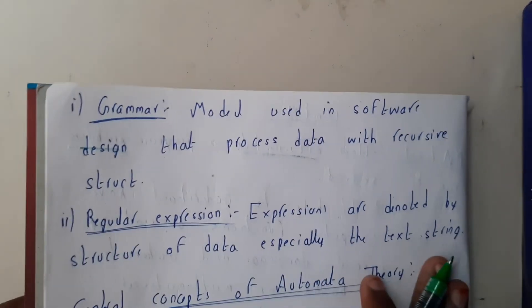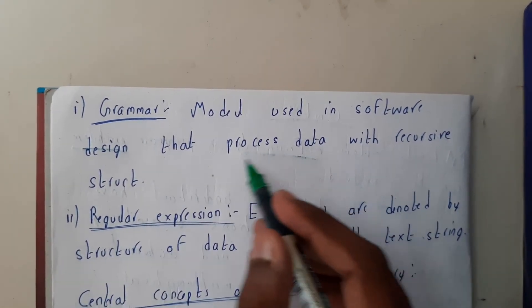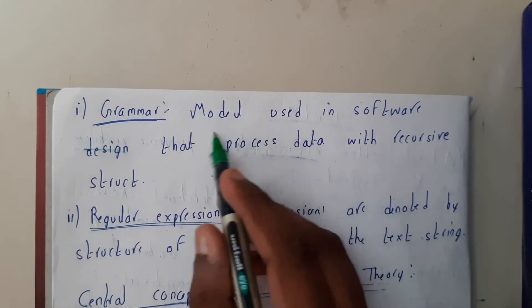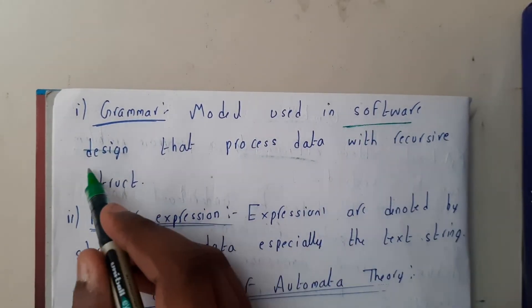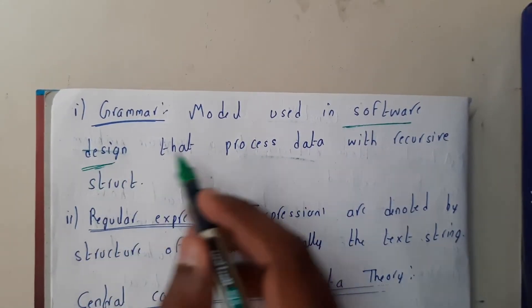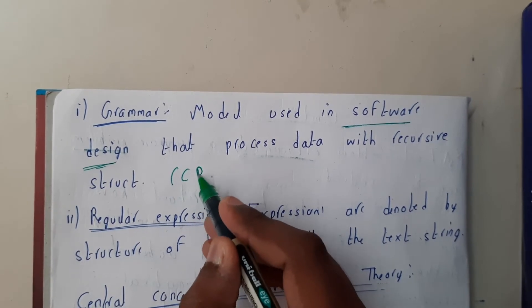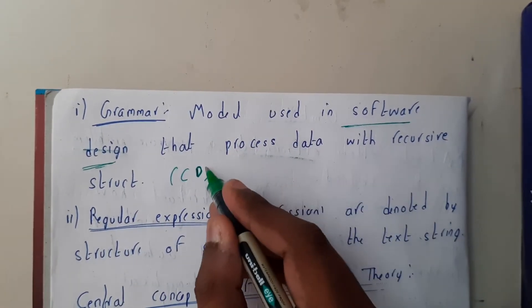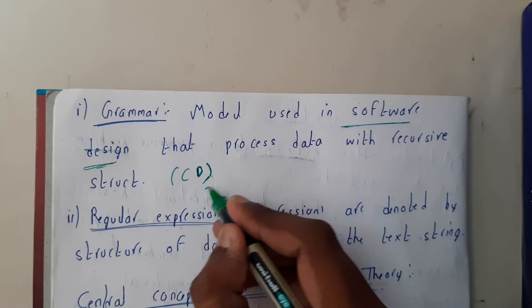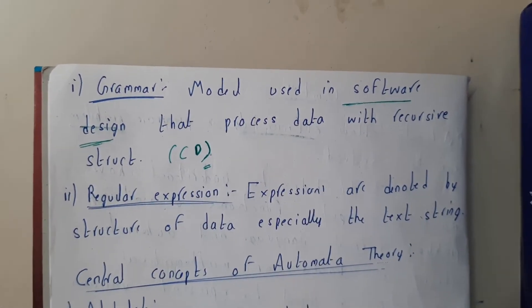Let us go through a small introduction about grammar. Grammar is used for software designing — specifically for compiler design. Whenever you want to create a compiler, this grammar is used as a backend.